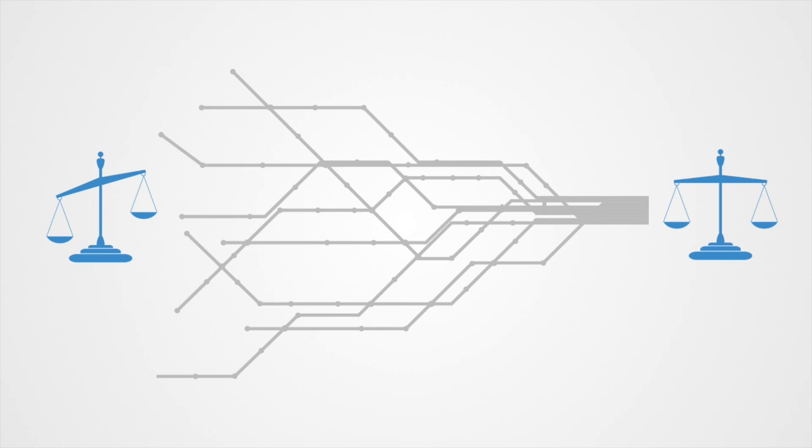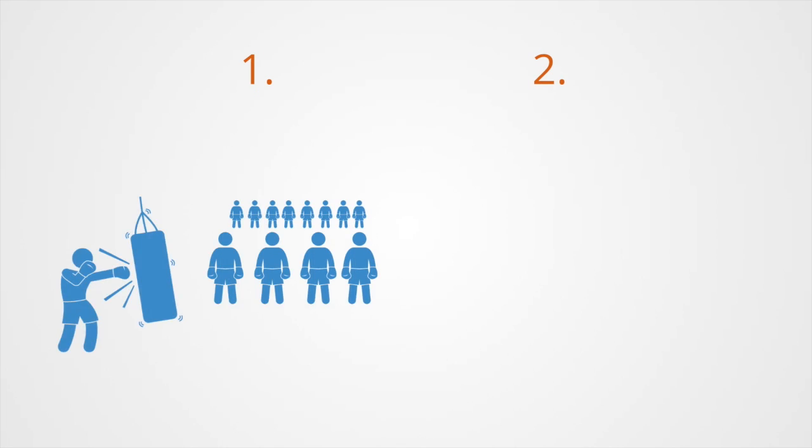Therefore, a successful stable strategy must have at least two characteristics. Firstly, it must be effective against competitors when it is still rare, so that it can enter the previous competing population and grow.